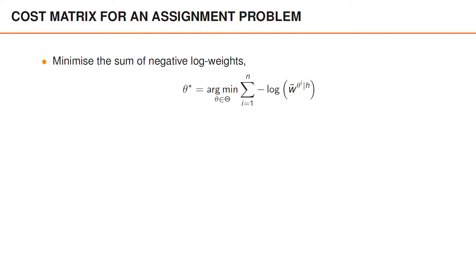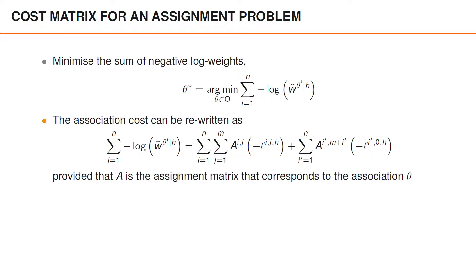The goal is to minimize the sum of negative log weights, and this can be rewritten by writing the association cost using these log likelihoods and an assignment matrix A, provided that the assignment matrix A corresponds to the association theta.